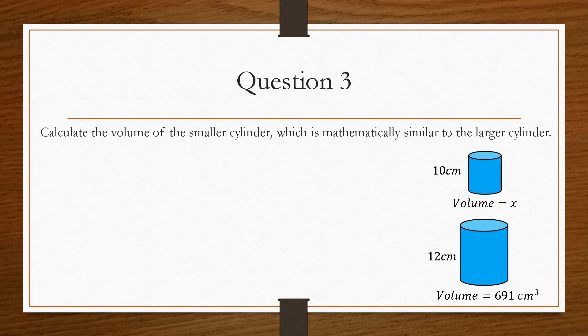And then lastly, to calculate the volume of a similar shape, this gives us two cylinders, which are mathematically similar. And this time, we want to find the volume of the smaller cylinder. So again, we need to label new and old. So this time, the smaller one becomes the new, and the larger one is the old, because the smaller one has the variable that we're trying to find.